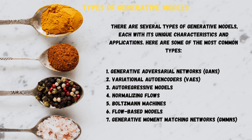There are several types of generative models, each with its unique characteristics and applications. Here are some of the most common types: 1. Generative Adversarial Networks (GANs). 2. Variational Autoencoders (VAEs). 3. Auto-regressive models. 4. Normalizing flows. 5. Boltzmann machines. 6. Flow-based models. 7. Generative Moment Matching Networks (GMMNs).